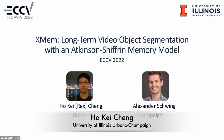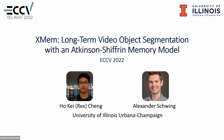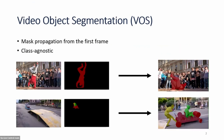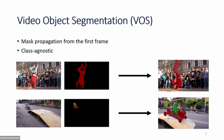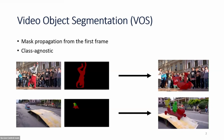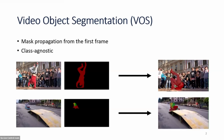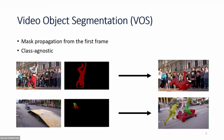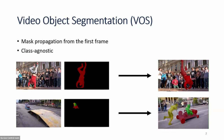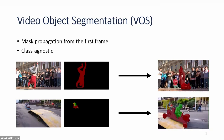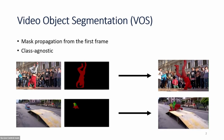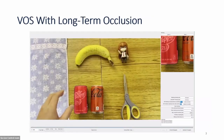Hello everyone, I'm Rex, and today I'm presenting our work X-MEM, Long-Term Video Object Segmentation with an Atkinson-Shiffrin Memory Model. Video object segmentation involves propagating the first-frame mask to the rest of the video. The model takes an image and corresponding mask for the first frame as input and tries to segment the same target object throughout the video. This mask is class-agnostic, meaning the model must deal with novel classes at test time — more like an open world setting — and there can be multiple objects, many occlusions, and objects with very similar appearances.